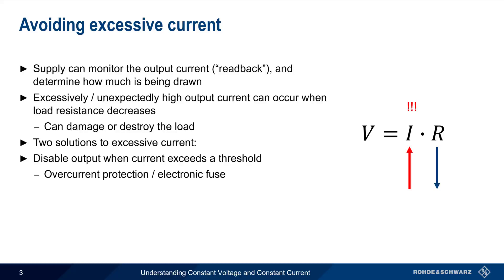Although turning off the output does protect the load, completely shutting off the power is sometimes undesirable. Another solution is to reduce the voltage such that the current falls below the threshold, and this mode of operation is called constant current mode.